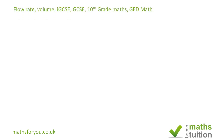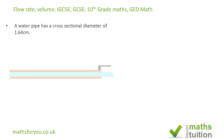Hello and welcome to this exercise on flow rate and volume. It is a GCSE question and therefore suitable for IGCSE, 10th grade, and GED math. We have a water pipe with a cross-sectional diameter of 1.64 centimeters.